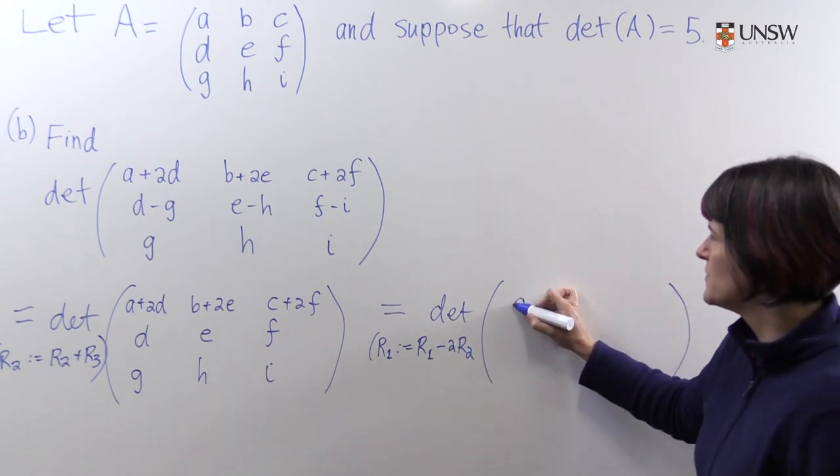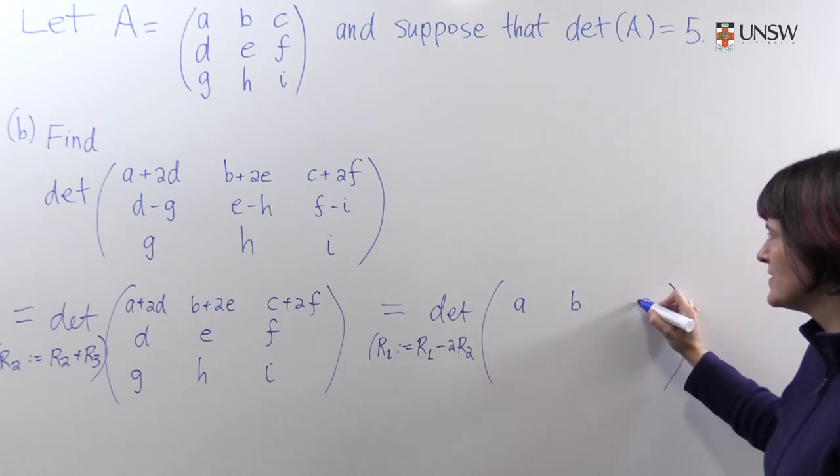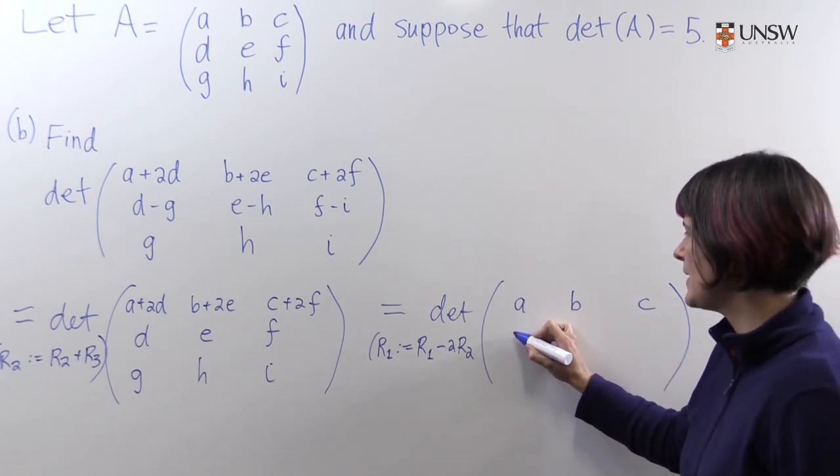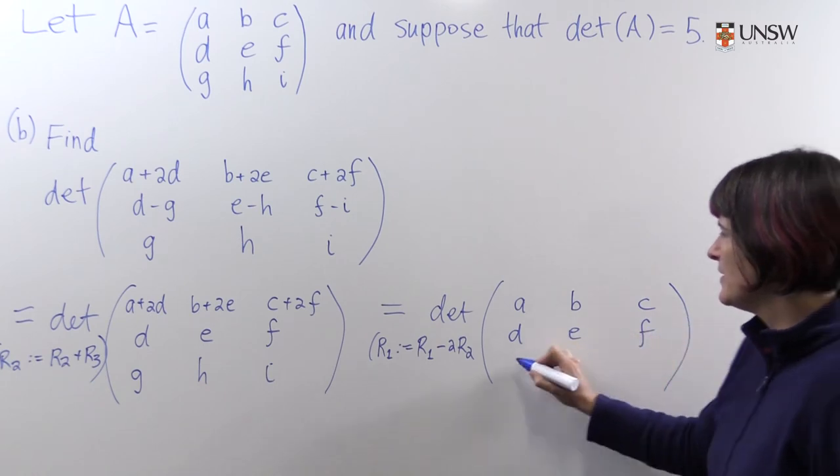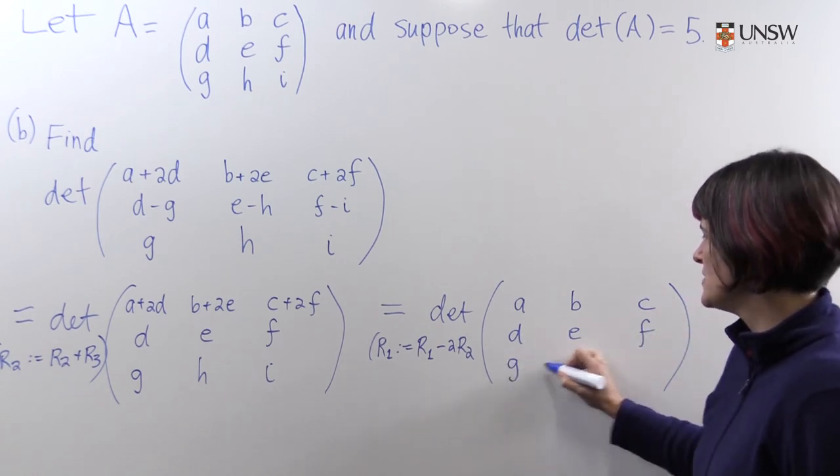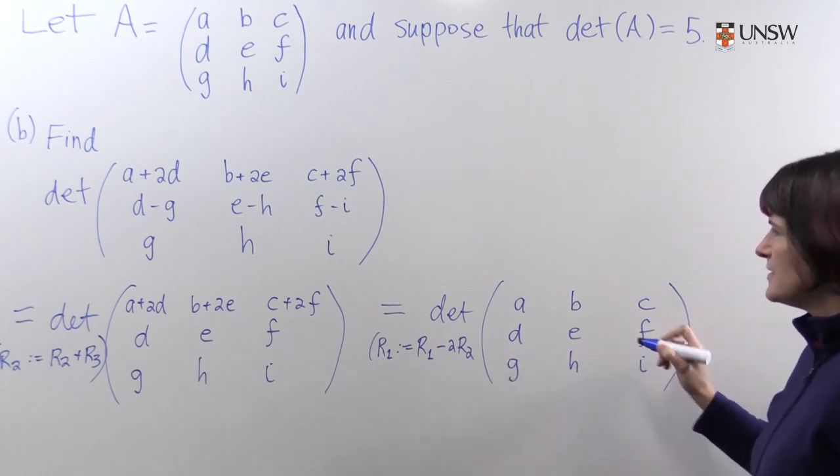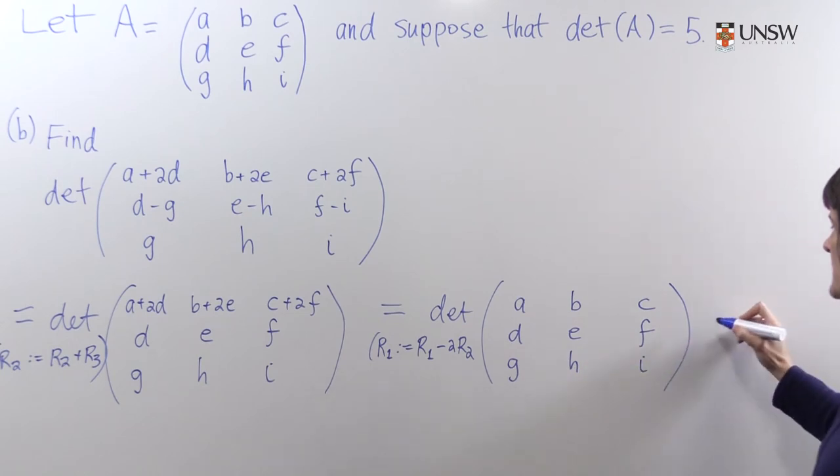This is going to give us the matrix A, which is this guy. And we know the determinant is five. So the answer to this question is five.